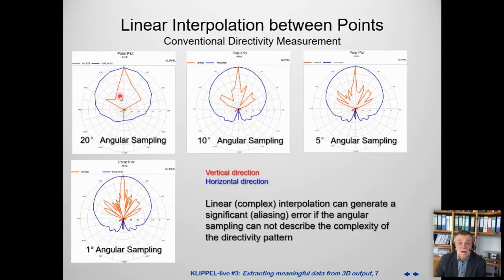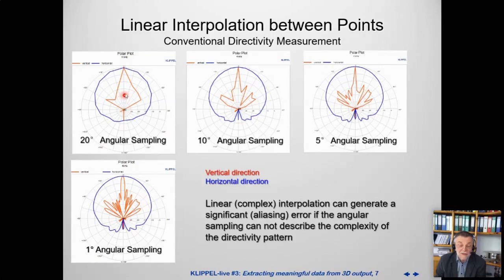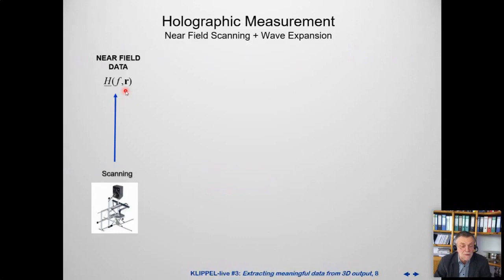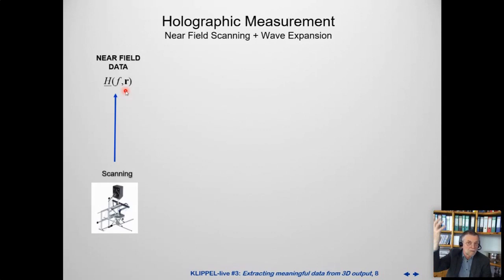Linear complex interpolation between sparse points can be dangerous if angular resolution from the measurement isn't good. You might have a very bad error and miss side lobes completely, with no warning that something is wrong. The holographic scanner addresses this: we perform a double-layer scan at two distances from the loudspeaker, acquire a certain number of points, and then check the accuracy of our sound field model using redundancy in the measurement data.